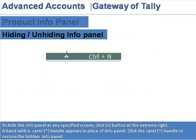To hide the Info Panel at any specified screen, click the cross button at the extreme right. A band with a carrot handle appears in place of the Info Panel. Click the carrot handle to restore the hidden Info Panel.